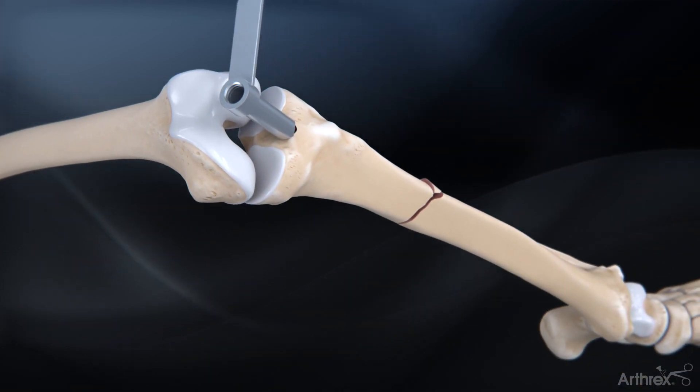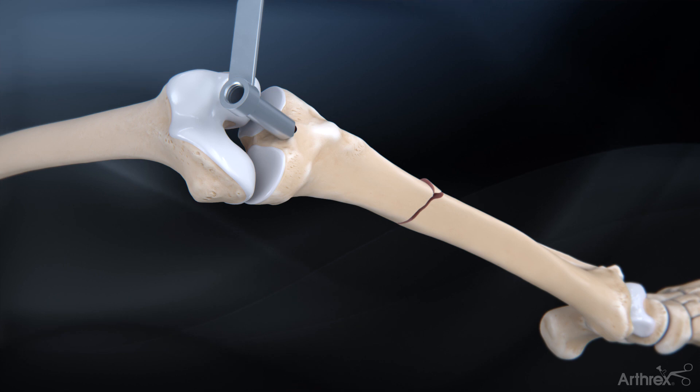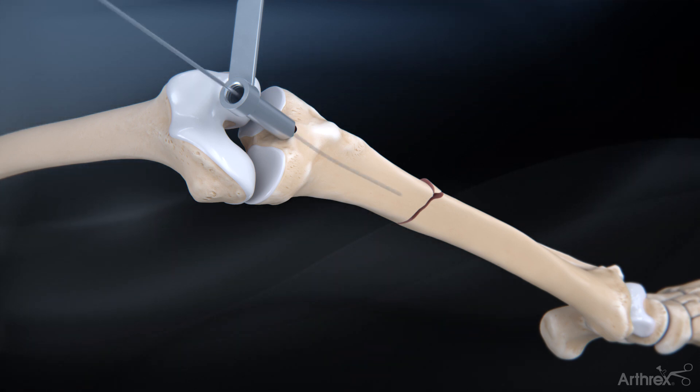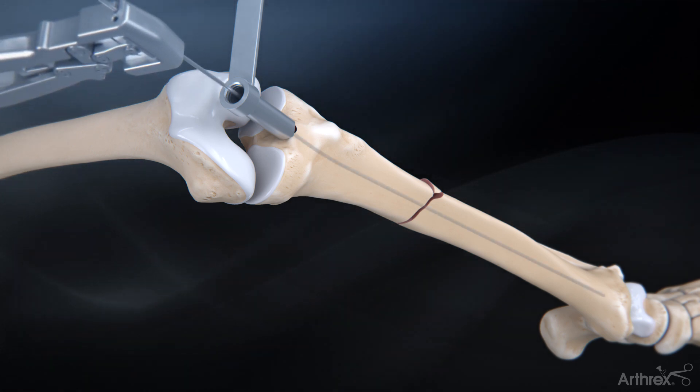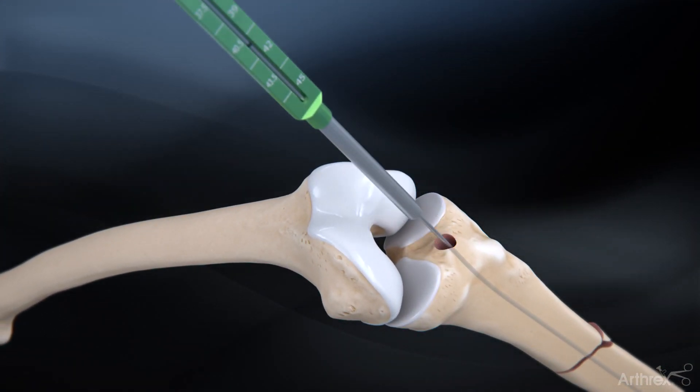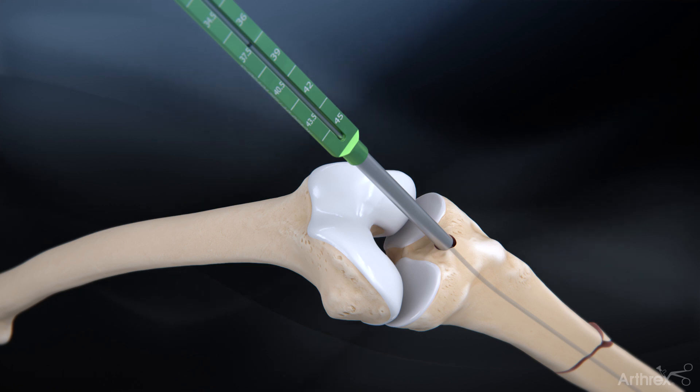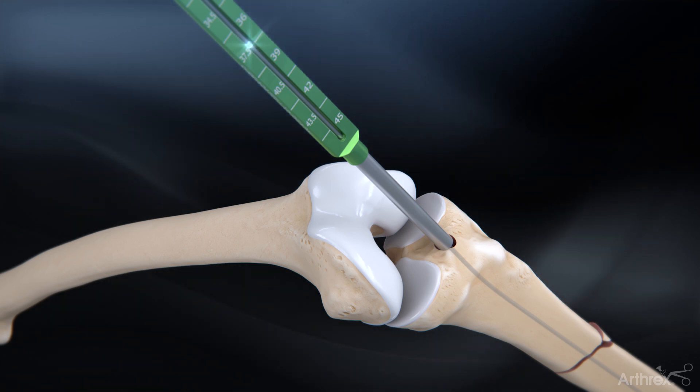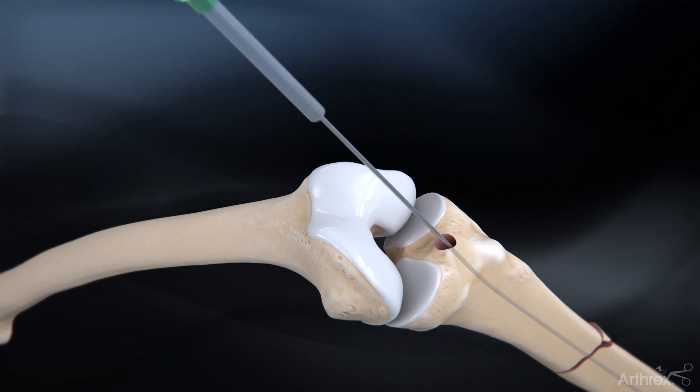After accessing the tibial canal, insert the 3.0 mm ball nose guide wire down the shaft of the tibia and past the fracture using the guide wire gripper. With the tip of the guide wire at the desired depth, measure the length of the nail by sliding the guide wire depth gauge over the guide wire and reading the measurement based on the etched line.